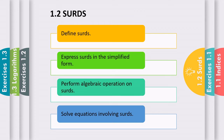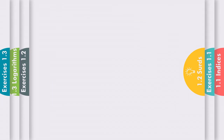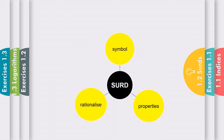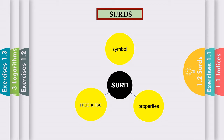Now let us continue with the next subtopic, which is subtopic 1.2: Surds. These are the learning outcomes for subtopic 1.2. A surd consists of three main things that you need to know: symbol, properties, and rationalize.